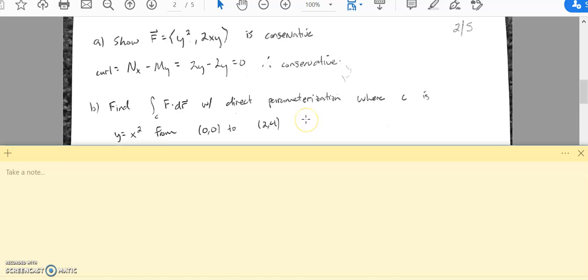Hopefully that's good. Let's get the next question. I want you to find the integral of f dotted with dr with a direct parameterization, where C is y equals x squared from (0,0) to (2,4). I need you to use y equals x squared. You can't use the idea of path independence. Go ahead, hit pause, give that a shot.